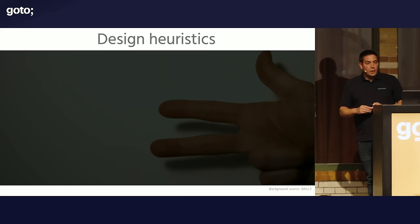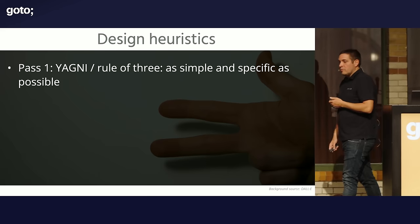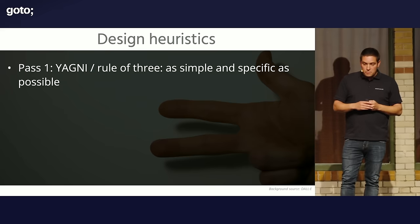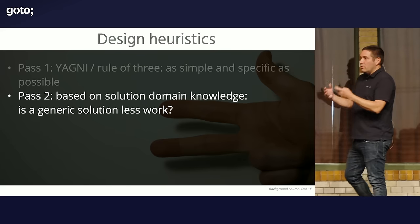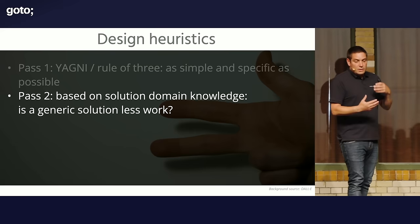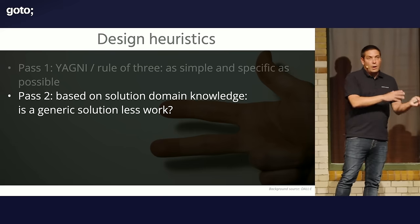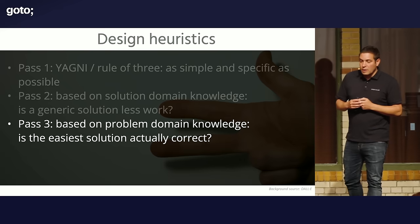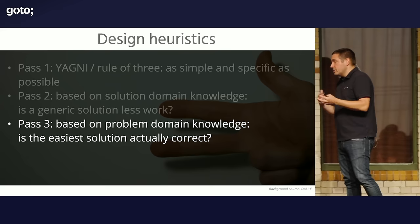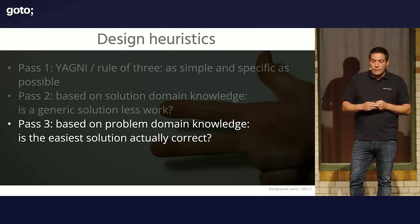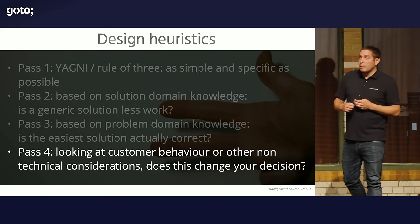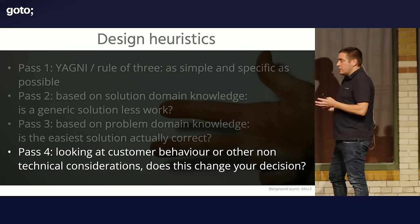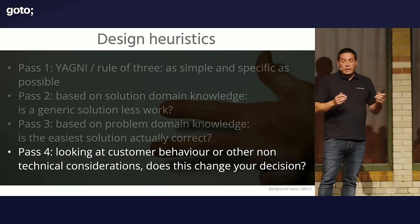Another approach is to apply a set of design heuristics — looking at a problem in several passes. First pass: make it as simple and specific as possible. You can always do this. Second pass: based on what you now know of the solution domain, is it less work to make a generic solution now or in the future? Third pass: based on your problem domain — now that you've built something — is the simplest solution actually correct, or are there less trivial use cases to consider? Fourth pass: looking at customer behavior or other non-technical considerations — does this change your decision, because there are other reasons this should be a pluggable module or plugin?